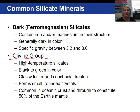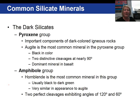Our dark or ferromagnesium silicates contain iron and or magnesium, which gives them their dark color. They have a higher specific gravity than our non-ferromagnesium silicate minerals. One common group is the olivine group, which is a high temperature silicate, black to green in color, and common in ocean crust and making up 50% of the earth's mantle. Another common group are the pyroxenes; the most common variety is augite. It is black to green in color, with two distinct cleavages at nearly 90 degrees, and pyroxene is found in basalt, an igneous rock we'll discuss in the next chapter.